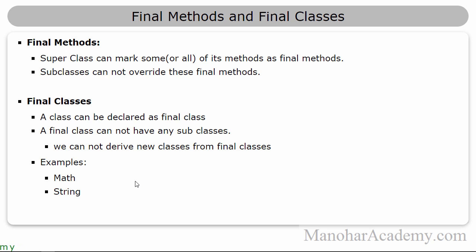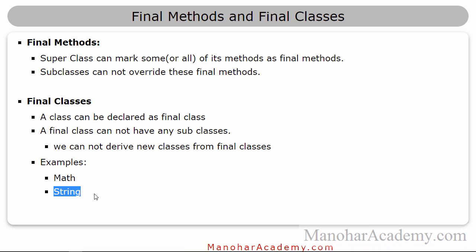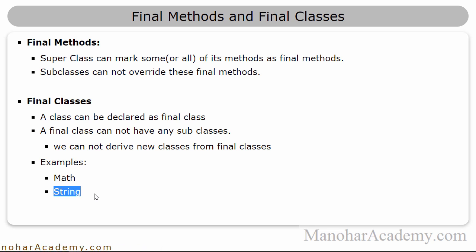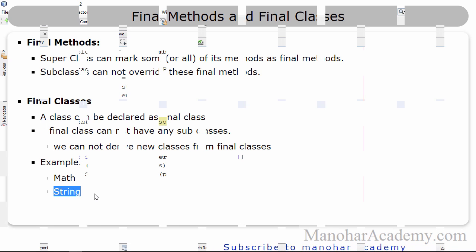Some examples: the Math class is final, and the String class is also final. String is used very extensively, so we don't want someone to create a subclass from String and change the behavior. Whenever we are talking about String, we want only one particular kind — there shouldn't be any subtypes for that. Let's see that in the IDE.